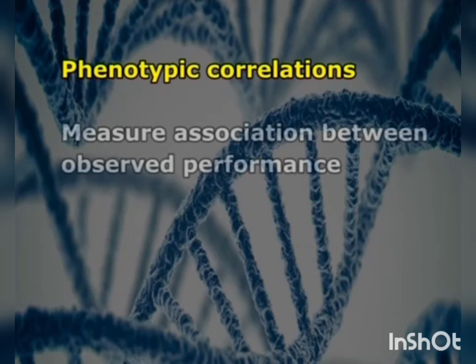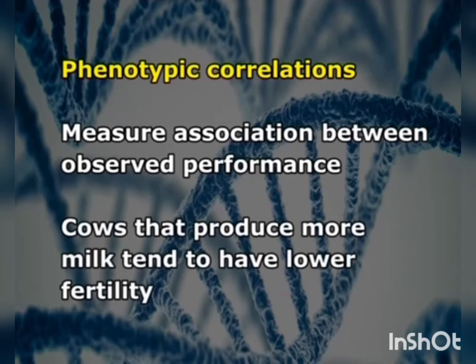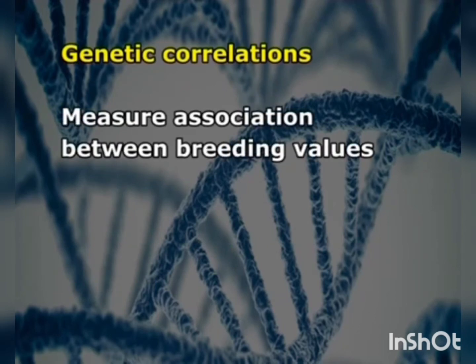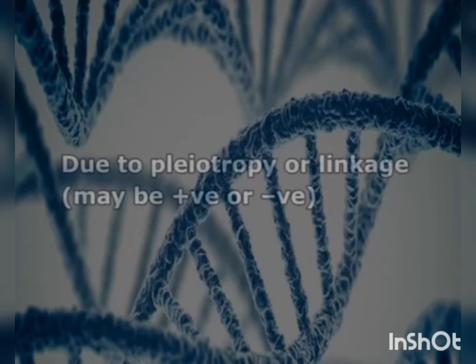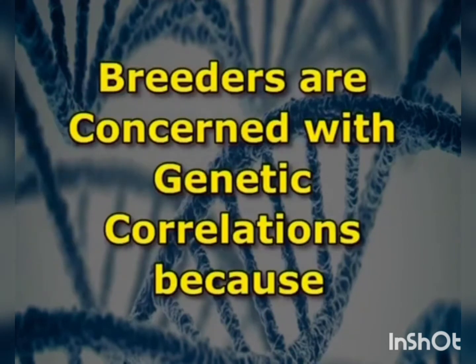Phenotypic correlations measure association between observed performance — for example, cows that produce more milk tend to have lower fertility. Genetic correlations measure association between breeding values — for example, bulls that give daughters producing more milk tend to have daughters with lower fertility. Due to pleiotropy or negative linkage, correlations may be positive or negative. Breeders are concerned with genetic correlations because they can cause undesired changes in traits that are important but not under direct selection. For example, selection for grain yield alone may result in increased height and growth duration because these traits are often positively correlated with yield.